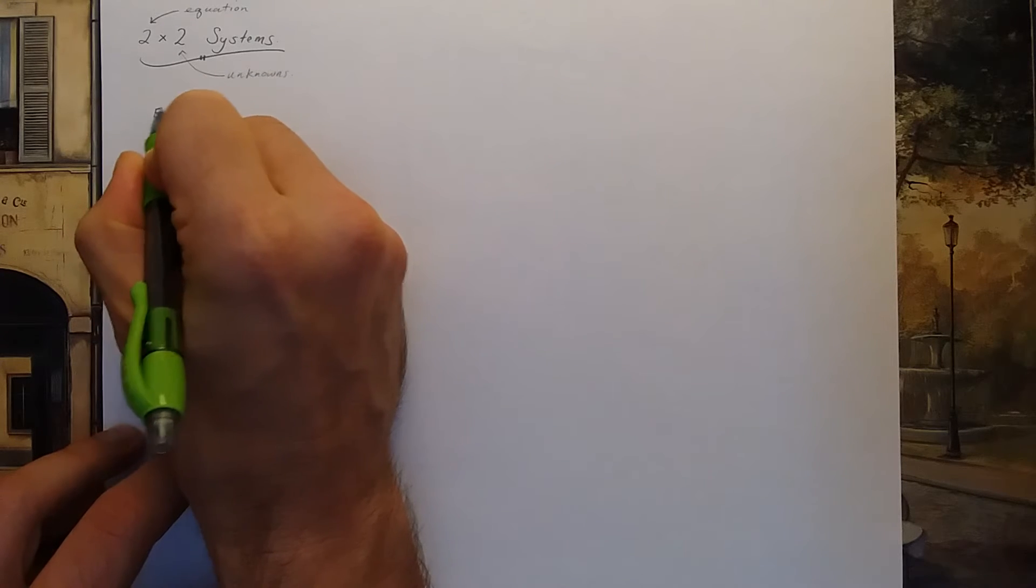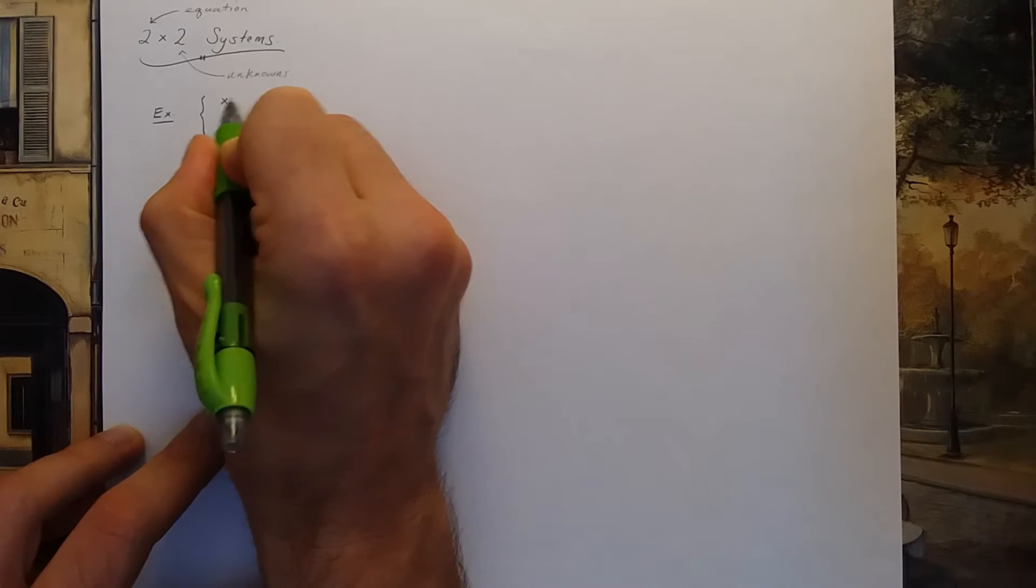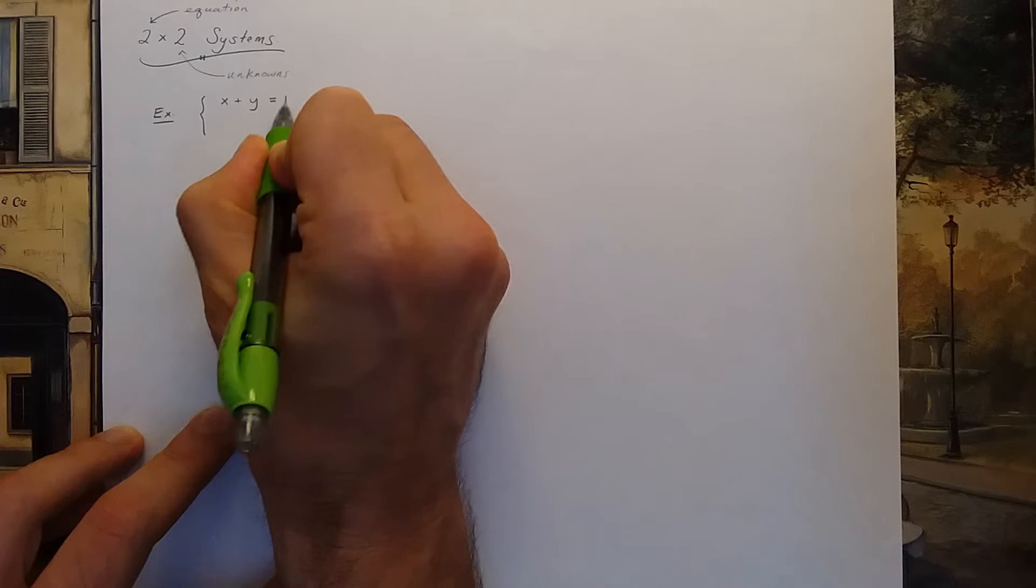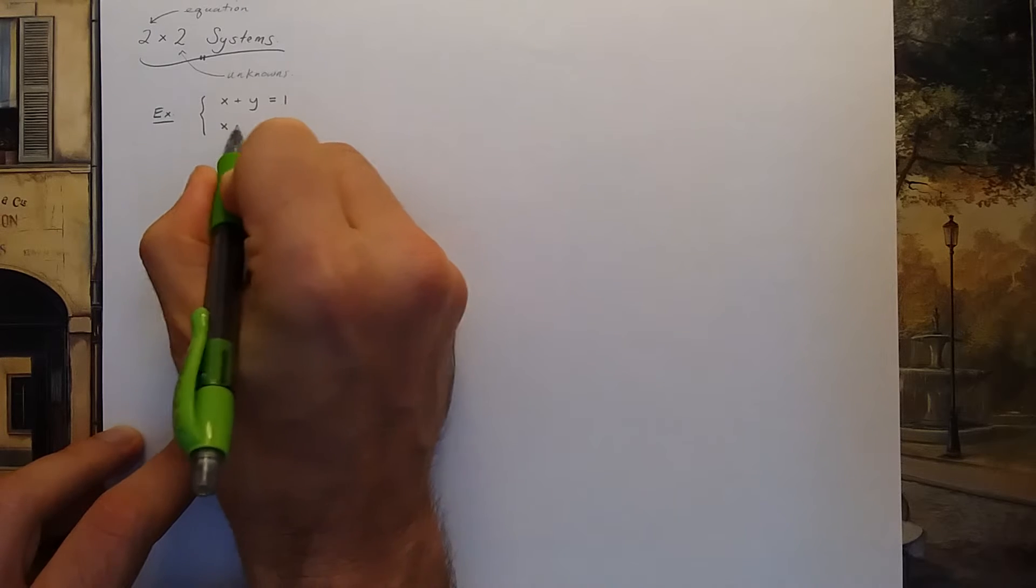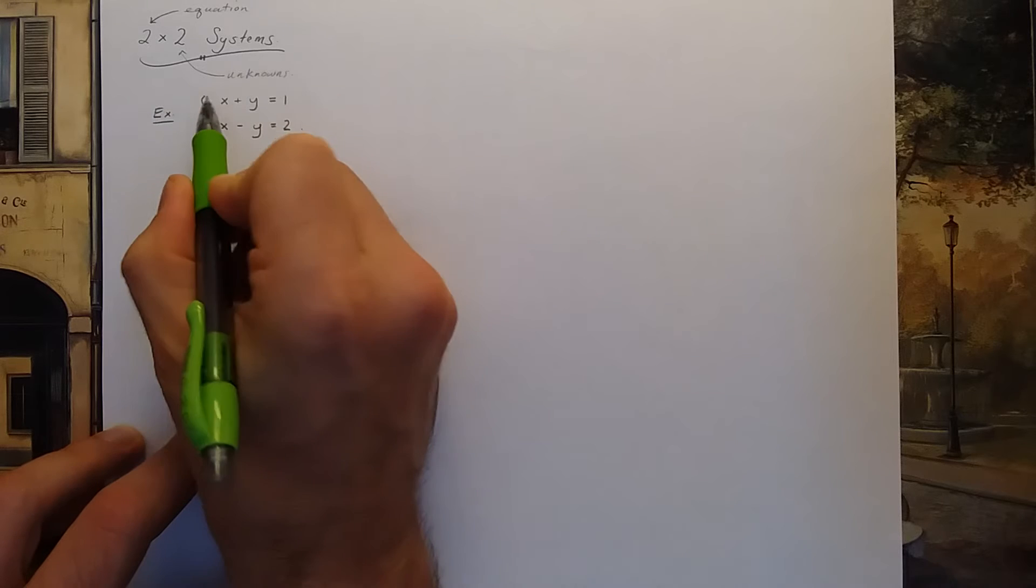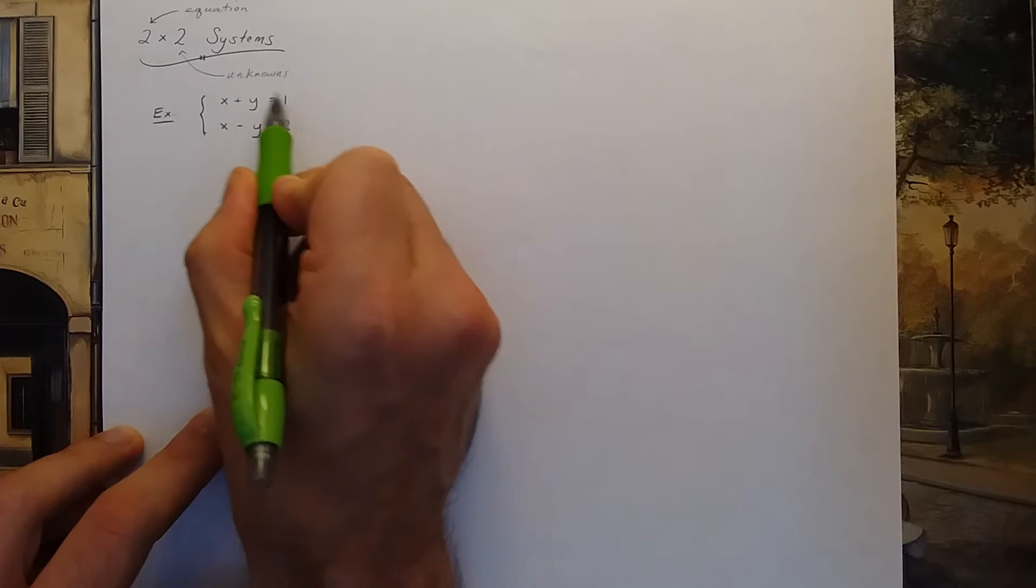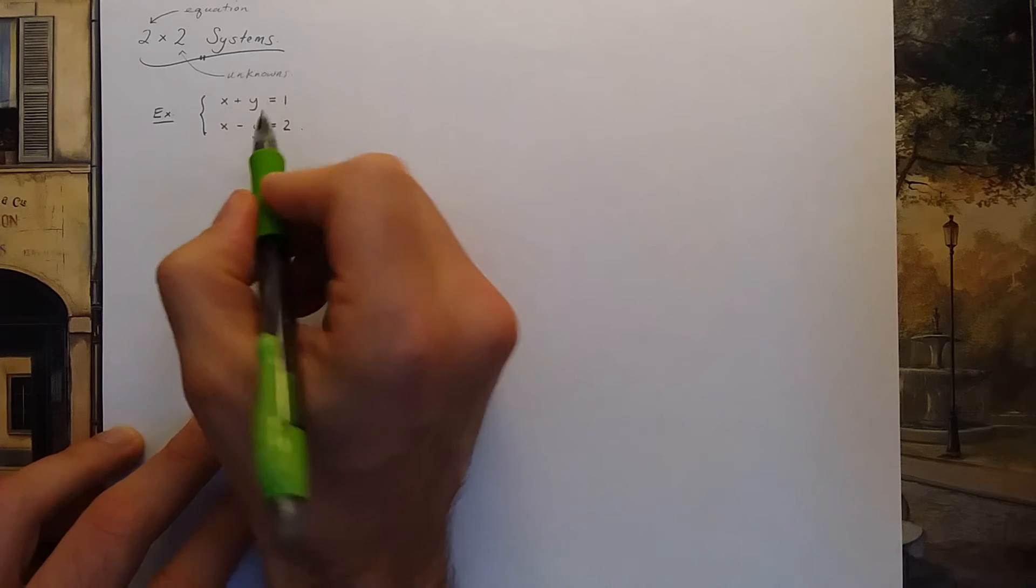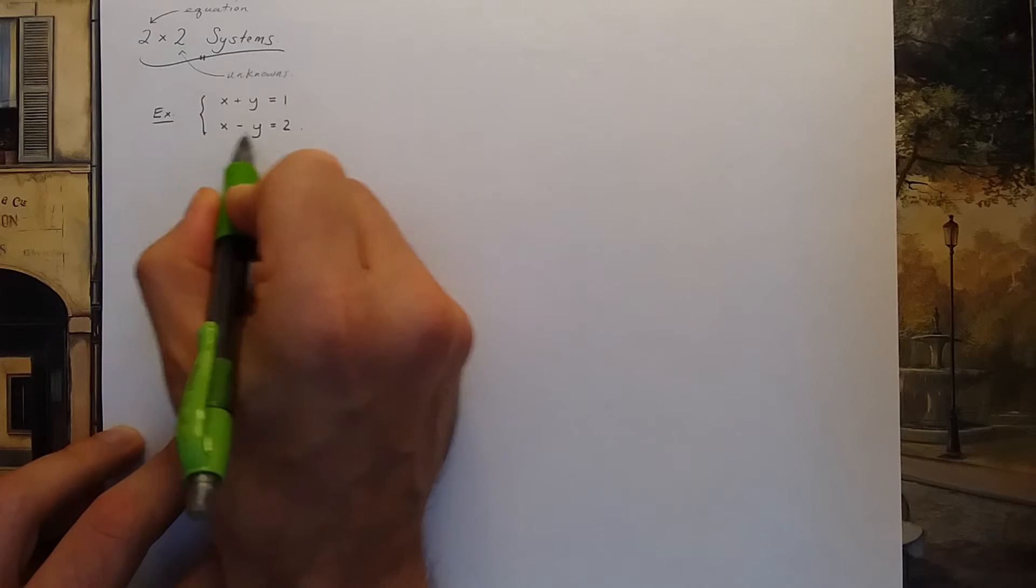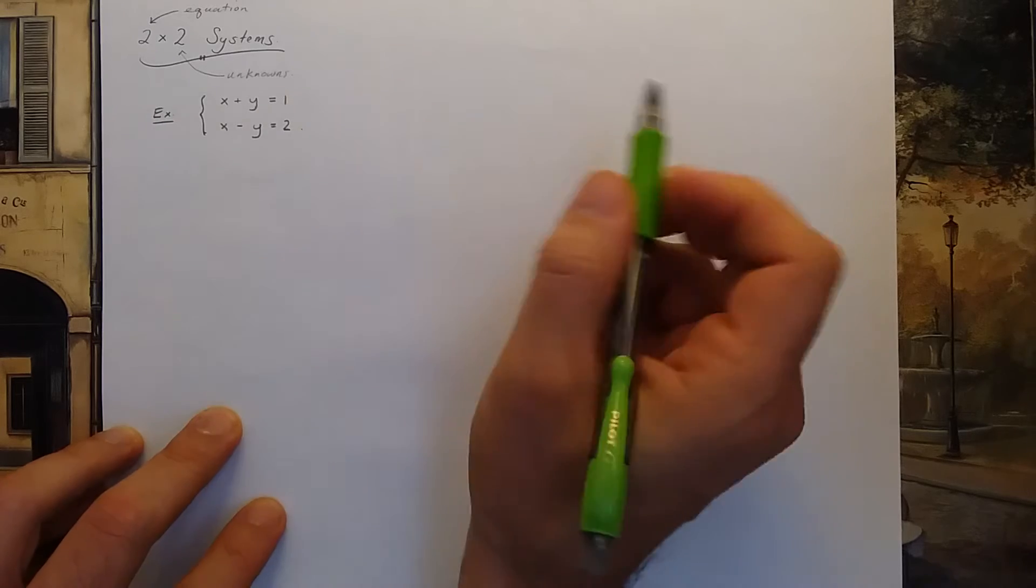So let's see some examples of a 2x2 system. I could have x plus y equals 1 and x minus y equals 2. When I put this brace here in front, that means the values for x and y in the first equation also have to satisfy the second equation. So the x and y values in here have to also work in the second equation.